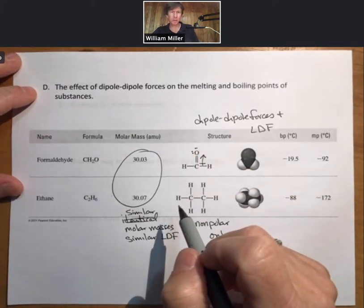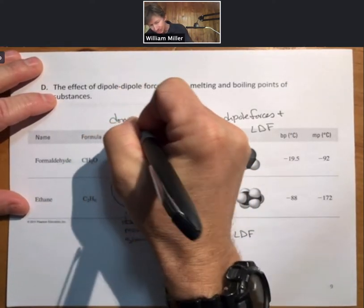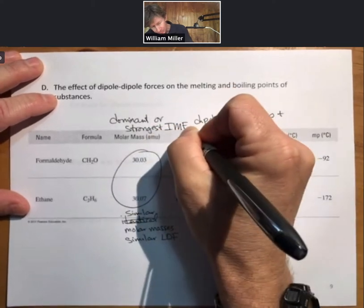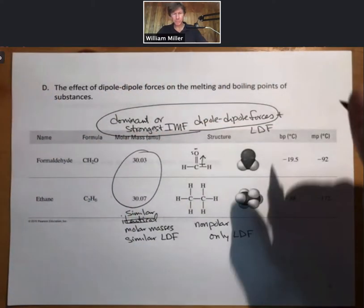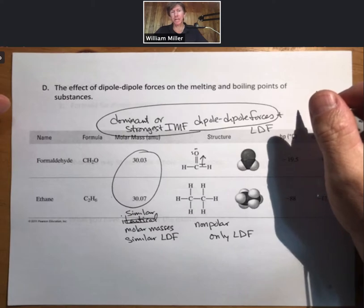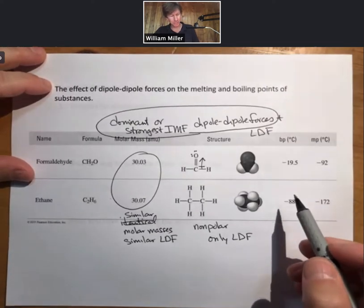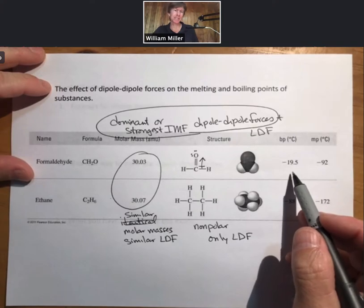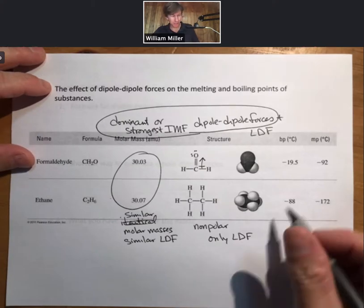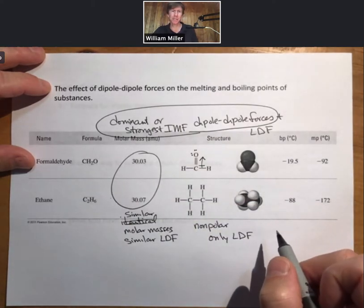Dipole-dipole forces are going to be the dominant or strongest intermolecular force for this molecule. They tend to be stronger than LDF, and that's why we consider them the dominant or strongest when they're both present. And we can see that due to dipole-dipole forces, there's a very significant raising of the boiling point, also a very significant raising of the melting point, because the intermolecular forces are stronger because they include LDF and dipole-dipole forces, and that shows up in the boiling and melting points.